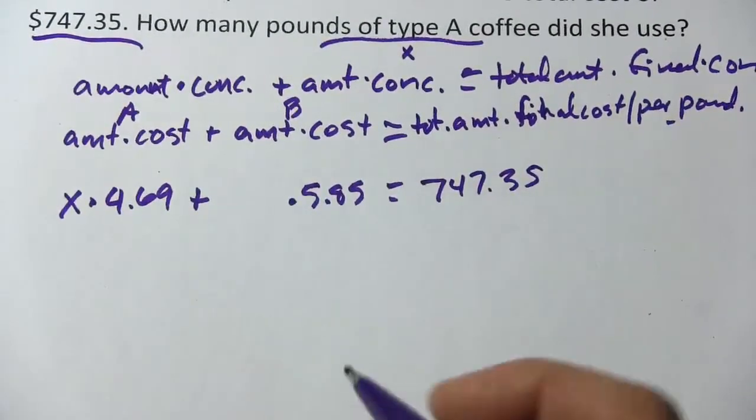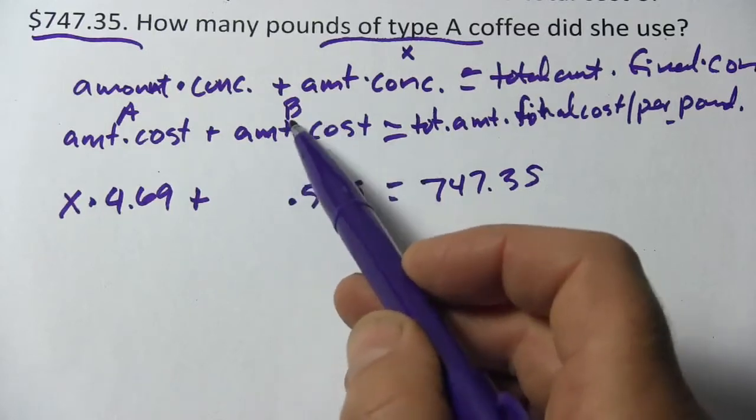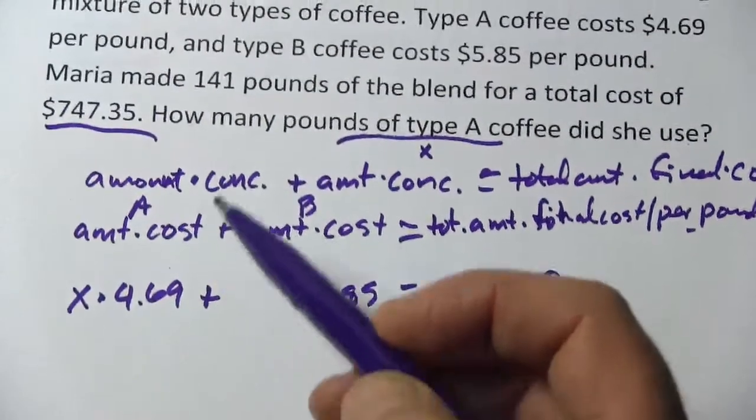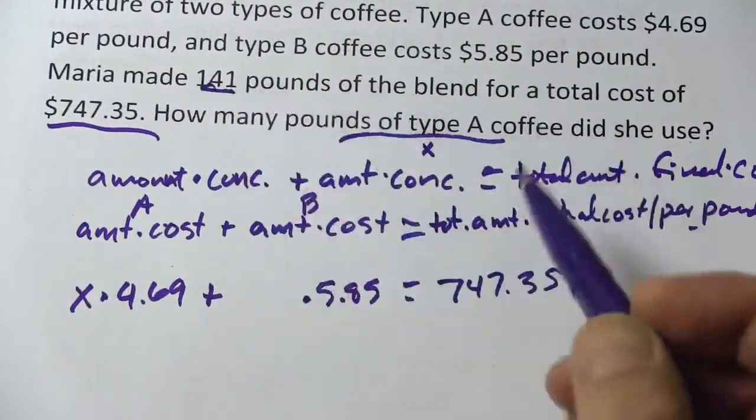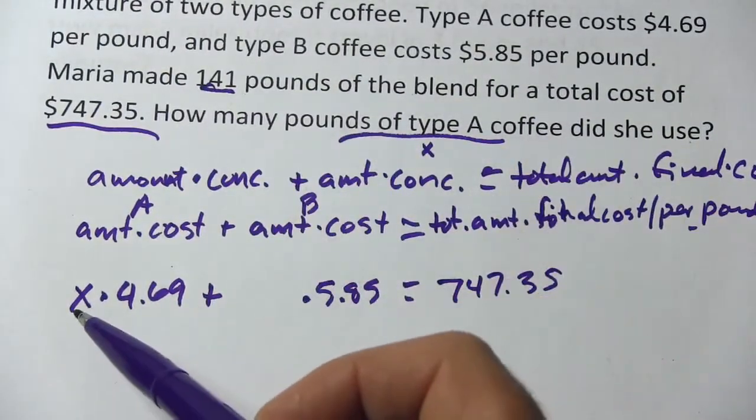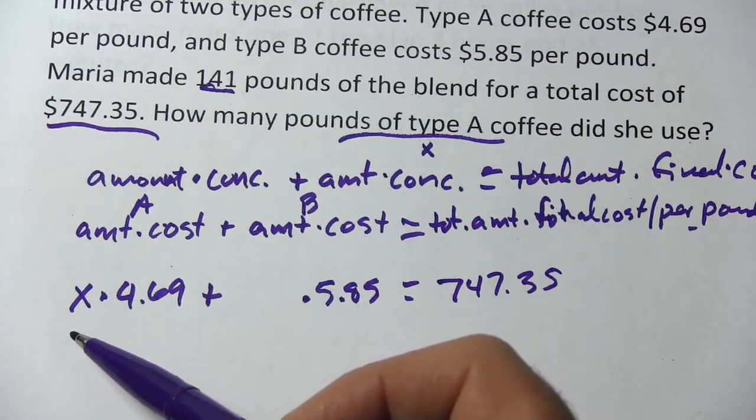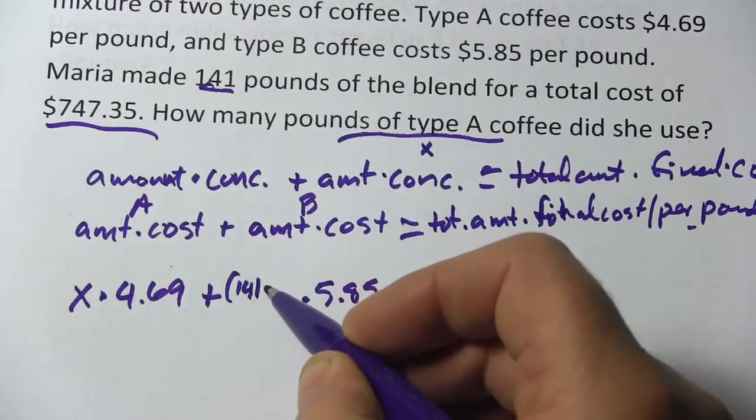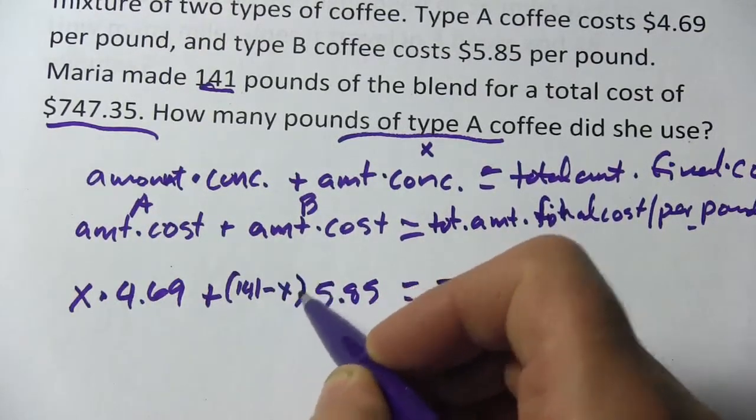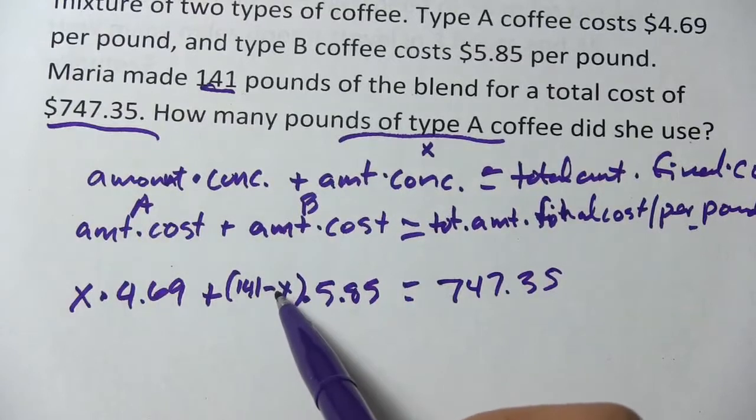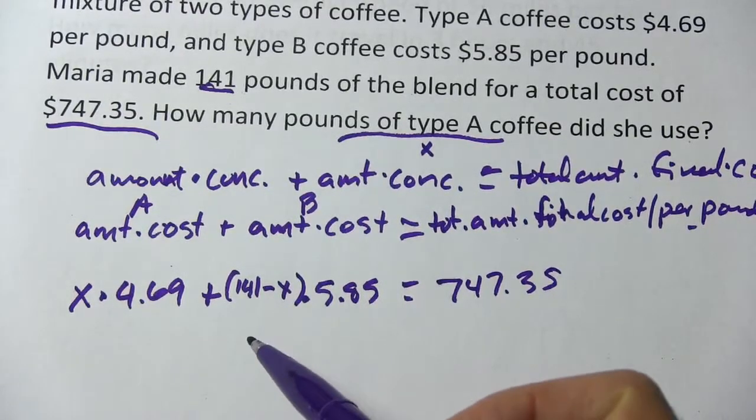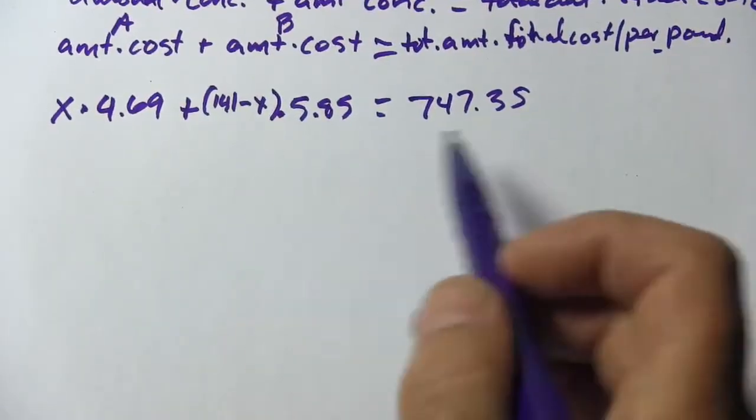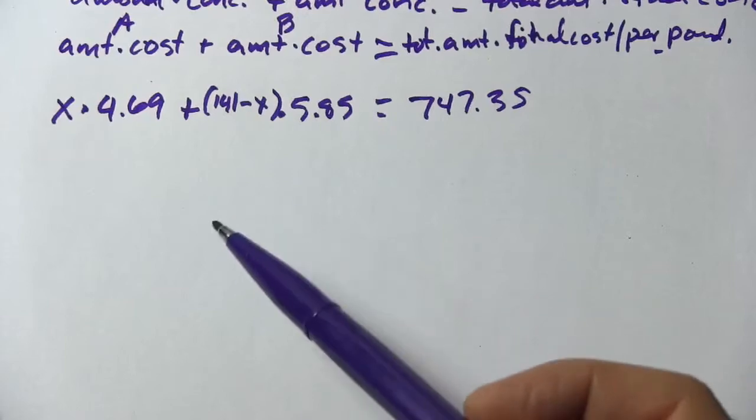Now what we're missing is the amount of type B coffee. Well what is that going to be? We do know the total number of pounds used. That was 141. If X is the amount of type A being used, we can write B in terms of X. We can say it's 141 minus X. Because the total minus the amount you use for type A is going to be the amount that's left over for type B. That's a lot of steps already just to get our equation written. But from here on out, it should be pretty straightforward.